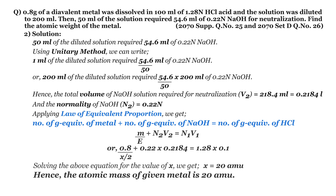Hence the atomic mass of the given metal is 20 AMU. In this way too we can solve this type of problem. I hope from now on you all can solve this type of problem related to volumetric analysis.